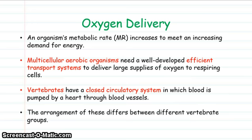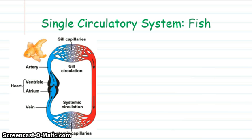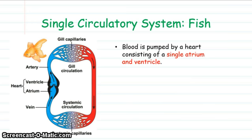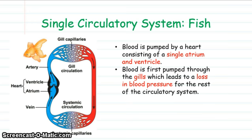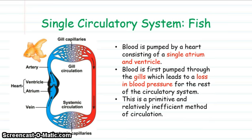Vertebrates have what's called a closed circulatory system where blood is pumped around by a heart. Fish have what's called a single circulatory system where the blood is pumped by a very simple heart consisting of just a single atrium and a ventricle. The blood is pumped first through the gills, so there's a big pressure loss in that process before it travels on to the systemic circulation around the rest of the body. As a result it's very primitive and relatively inefficient.